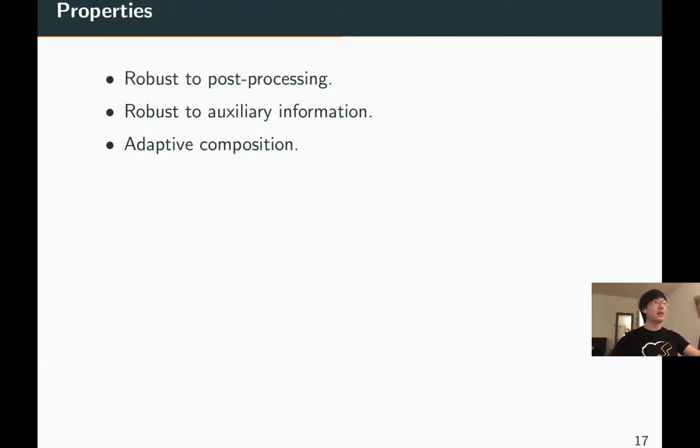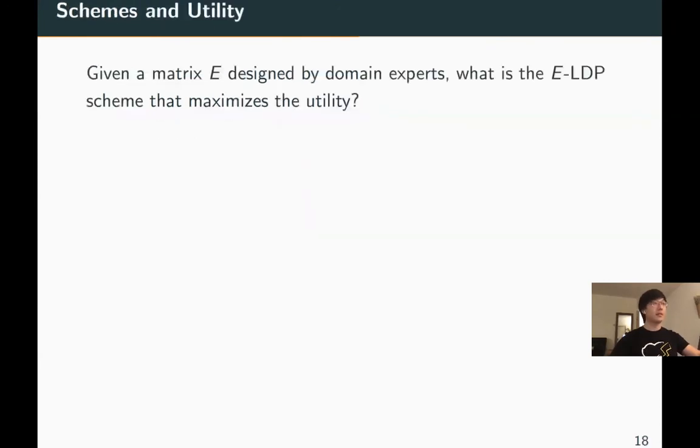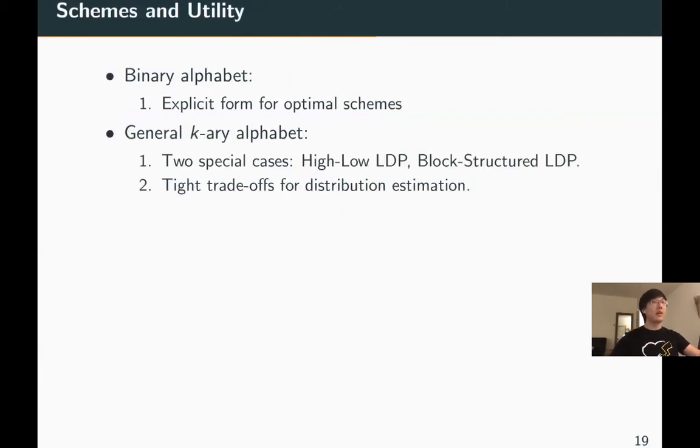Now the question is, given an E-matrix designed by domain experts, what is the scheme that maximizes utility? For binary alphabet, we give explicit form for optimal schemes for all utility functions with a reasonable assumption. For generic k-ary alphabet, the optimal scheme is unclear in general. Here we consider two special cases: high-low LDP and block-structured LDP. We characterize tight trade-offs for the task of distribution estimation under these two notions.